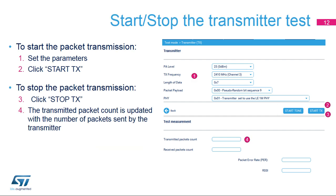The transmitter test is used to send packets. The transmission power level and frequency, the length and content of the data, and the physical modulation can be selected. After pressing Start TX, packets are sent indefinitely until Stop TX is pressed. After the end of the transmission, the number of transmitted packets is displayed.